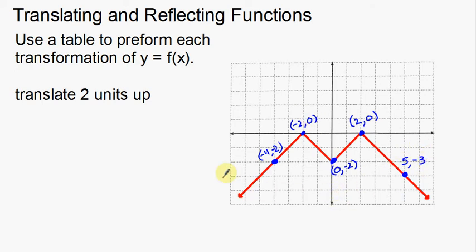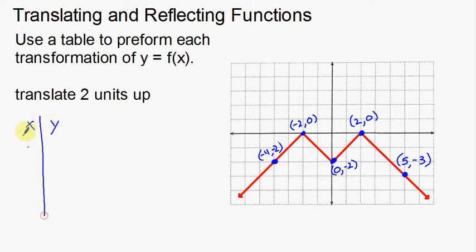You might ask yourself, why would you need 5 points? You need enough points to make an accurate table. I chose 5 because I have the peaks, the valley, and then one arm on each side. It kind of depends on what the function looks like — sometimes you'll need 2 points, sometimes 5, sometimes 8. Now I'm going to make my table — an x, y coordinate table.